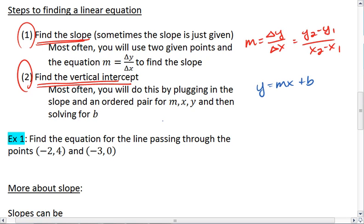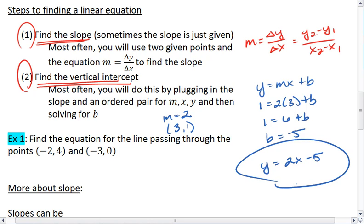For example, if you already know that you have a slope of 2 and that your equation will pass through the point... actually let's change this point to 3, 1 so we have different numbers. You can plug these values into your equation and solve for b. So we find that b equals negative 5, meaning the equation would be y equals 2x minus 5.